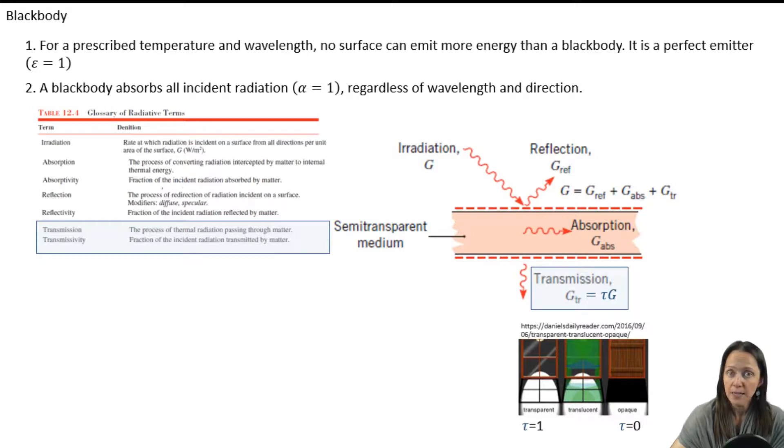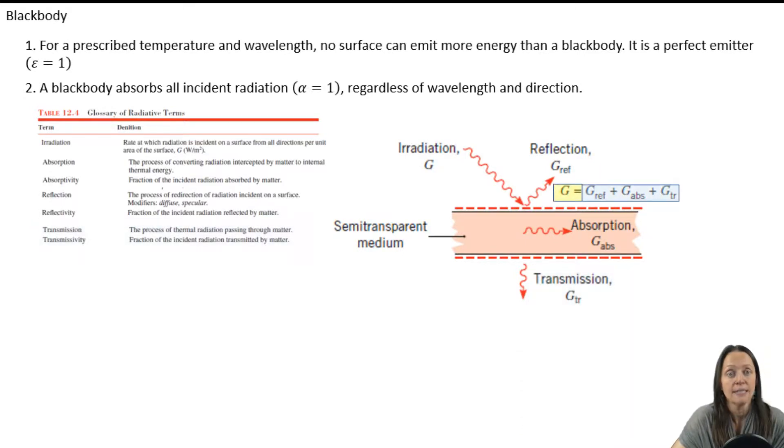So as you would expect, the sum of the reflected, absorbed, and transmitted radiation, they need to be equal to the incoming radiation. And the sum of the fractions of irradiation that are reflected, absorbed, and transmitted have to be equal to one.